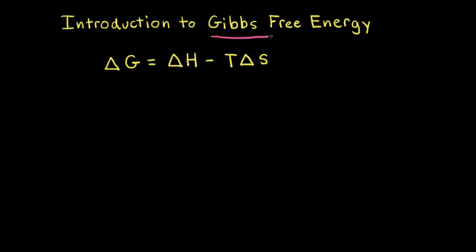Gibbs free energy is symbolized by G, and change in Gibbs free energy is symbolized by delta G. The change in free energy delta G is equal to the change in enthalpy delta H minus the temperature in Kelvin times the change in entropy delta S.